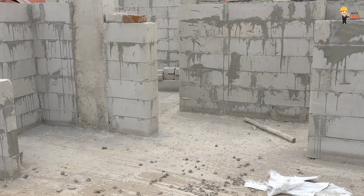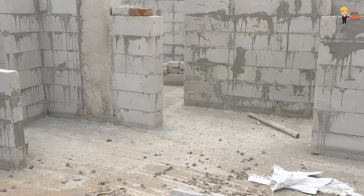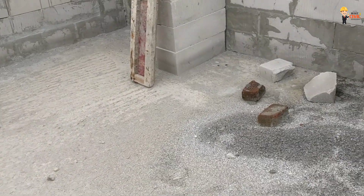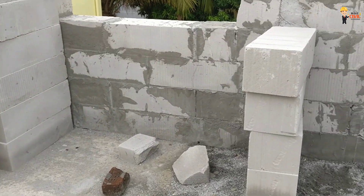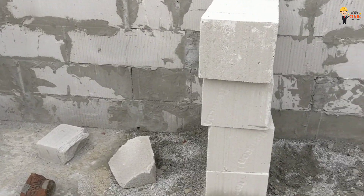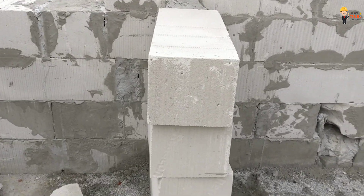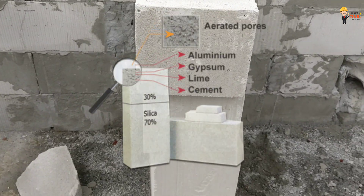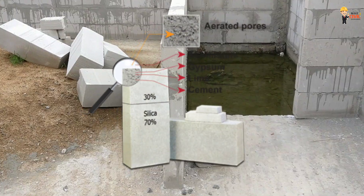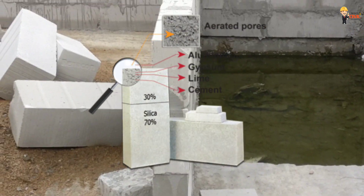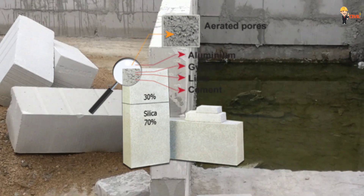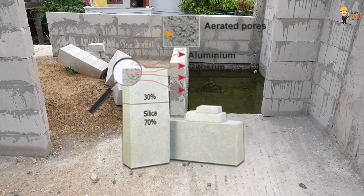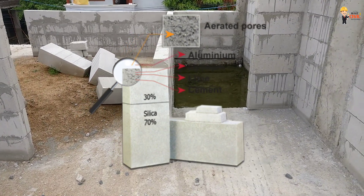How do you manufacture this? The materials are Flyash, Gypsum, Lime, OPC (Ordinary Portland Cement), and Aluminium.